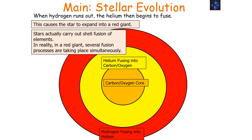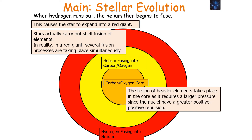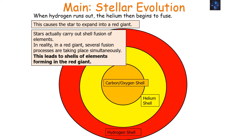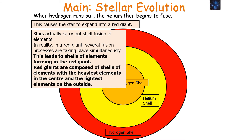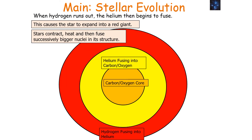Stars actually carry out shell fusion of elements in the red giant, so several fusion processes are taking place simultaneously. Fusion of heavier elements takes place in the core, as this requires a larger pressure since the nuclei have a greater positive-positive repulsion. Fusion of lighter elements takes place in the outer layers, as it requires lower pressure. This leads to shells of elements forming in the red giant — heavier elements in the centre and lighter elements on the outside. Over time, the stars contract, heat, and then fuse, successively, with bigger nuclei in the structure.